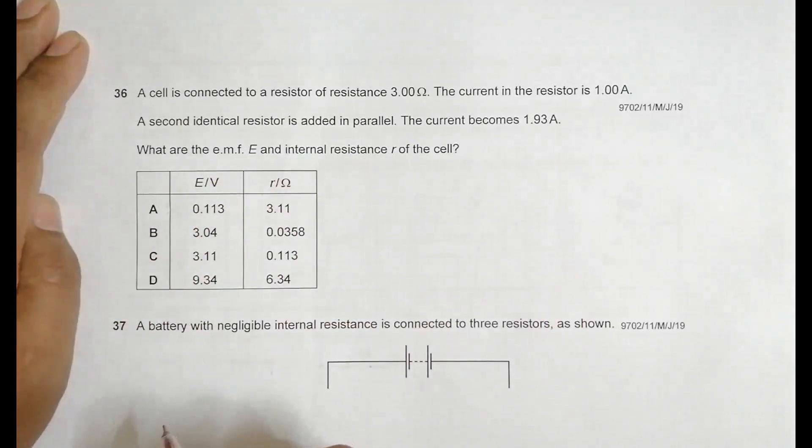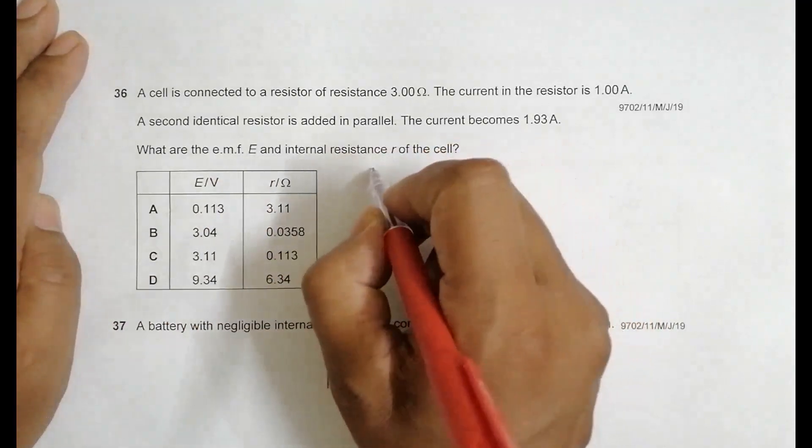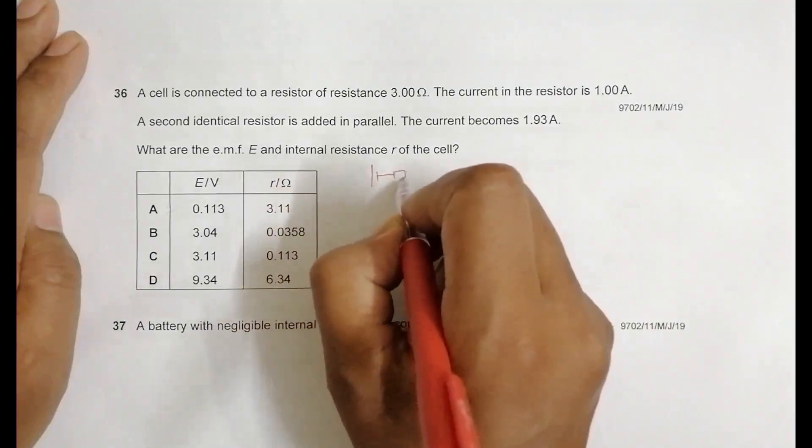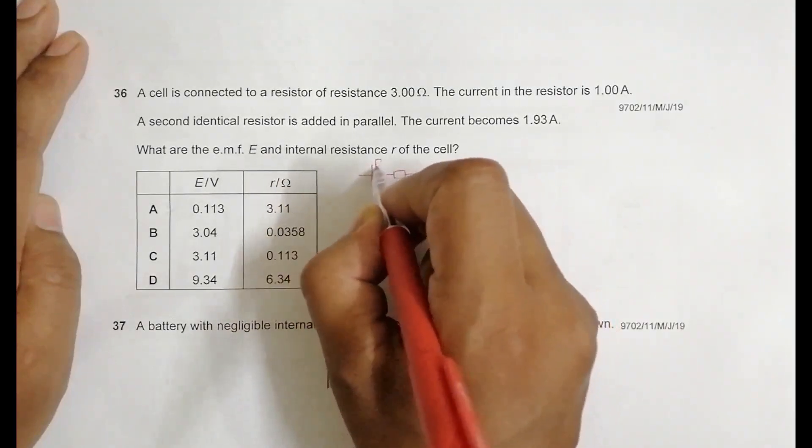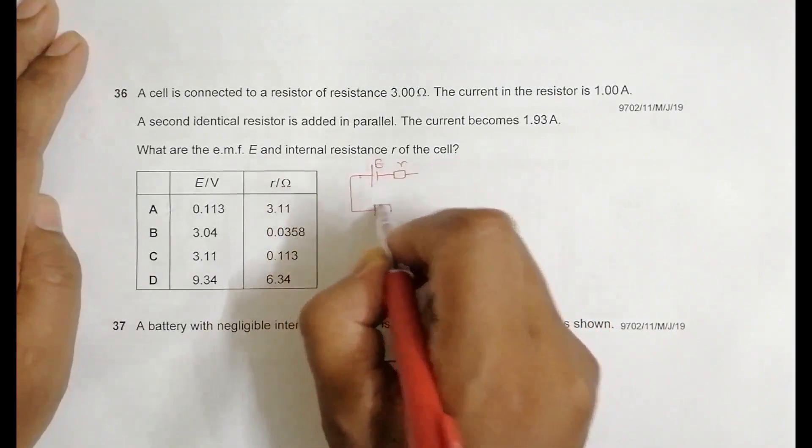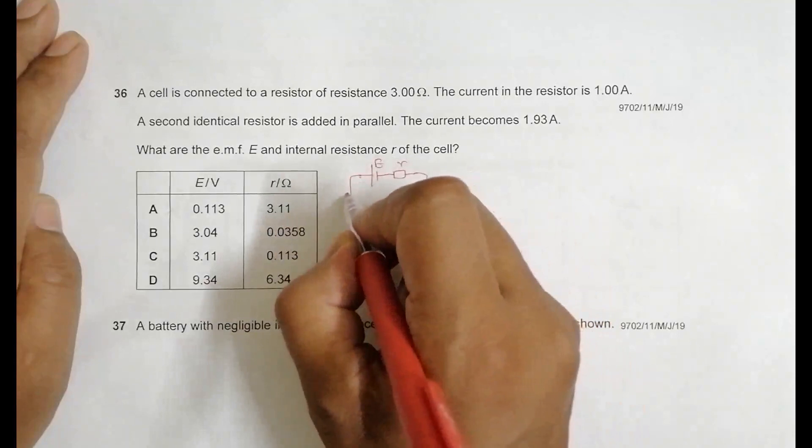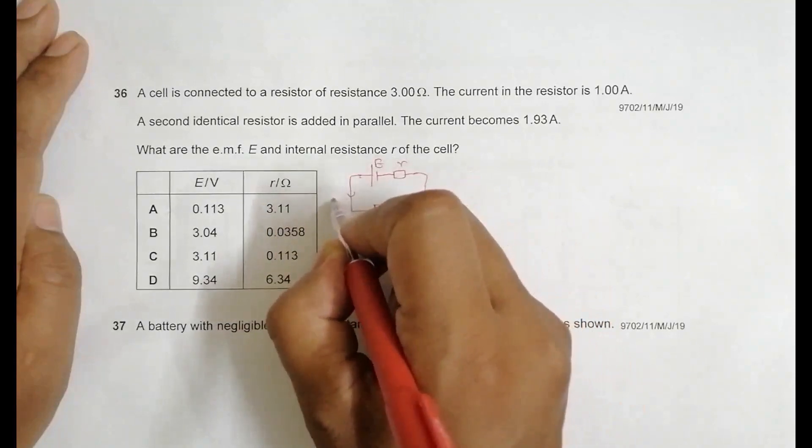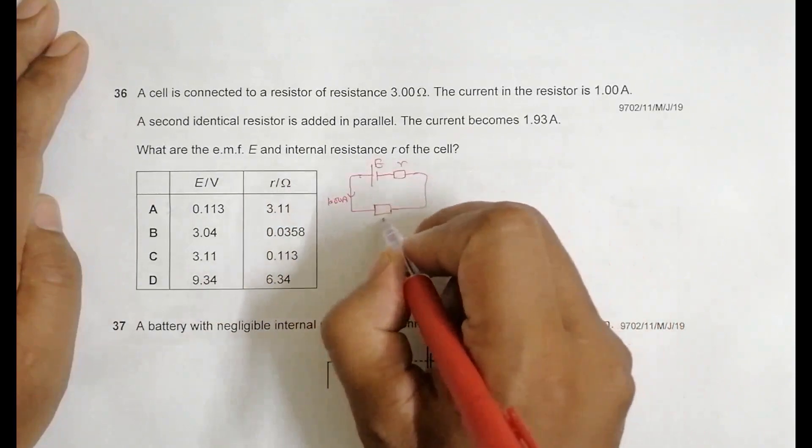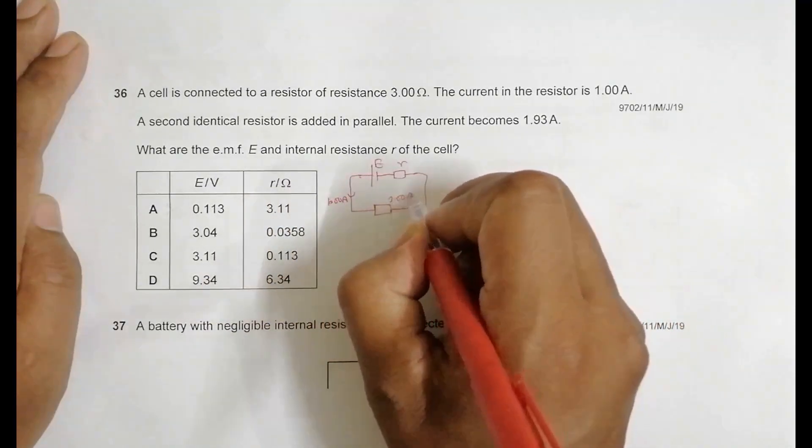The source that we have has got internal resistance. Let's draw the first case. The first diagram should be like this: this is the source with EMF E, and this is the internal resistance r, and this is the external resistor here. The current here is equal to 1.00 ampere and the resistor here is 3.00 ohm.